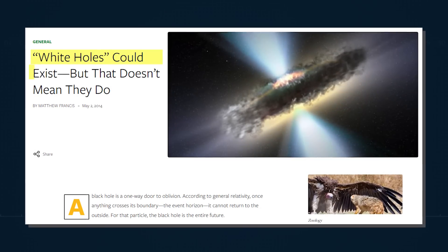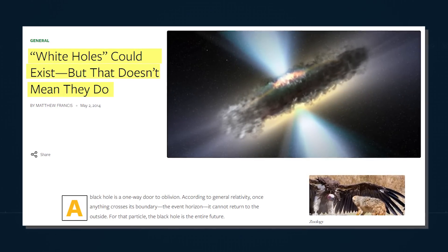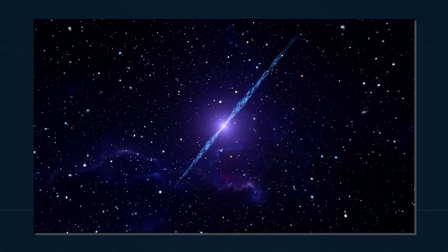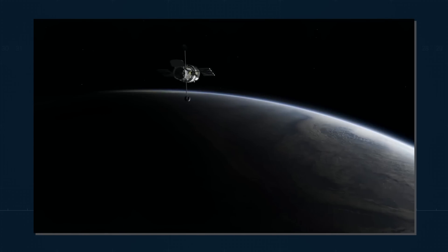This is why some scientists call white holes an impossible possibility, meaning that while they can't be completely ruled out, they also don't expect to see one with telescopes.